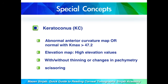So again, to say that the patient has keratoconus, there should be an abnormal anterior curvature map, or normal anterior curvature map but with Kmax above 47.2 diopters. The patient should also show abnormal high elevation values, especially on the posterior elevation map, with or without thinning or changes in the pachymetry, and we should see scissoring reflex during retinoscopy.